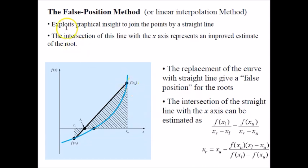This method exploits graphical insight to join the points by a straight line. Here, this is your xl. If you substitute your xl into this function, you will get your fxl here, this value of fxl. And this is your xu. This is your fxu value. And here at the x-axis is your xu.